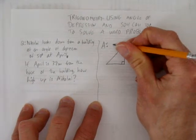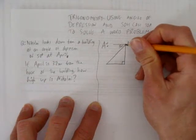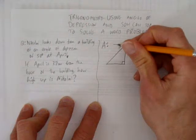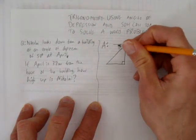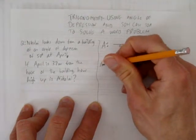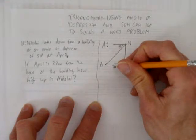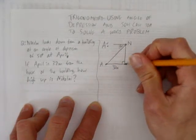And he looks down at an angle of depression of 50 degrees. That means the angle goes right here. It's from where Nikolai would be looking straight out, but instead he's looking down at an angle of depression of 50 degrees. April, on the other hand, is down here. And we don't know her angle yet, but we do know she's 32 meters from the base of the building.